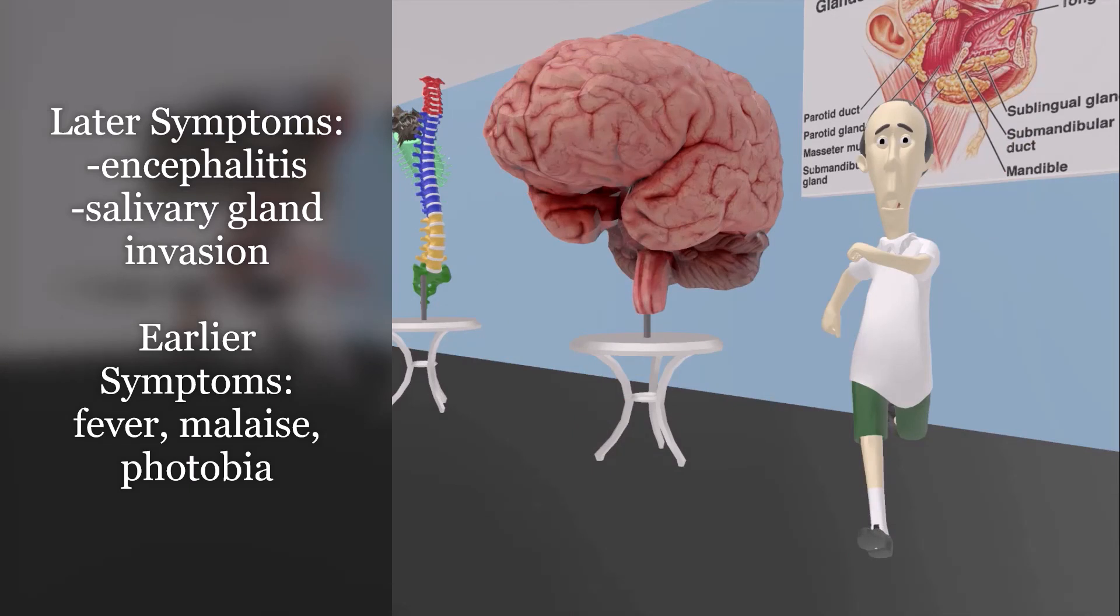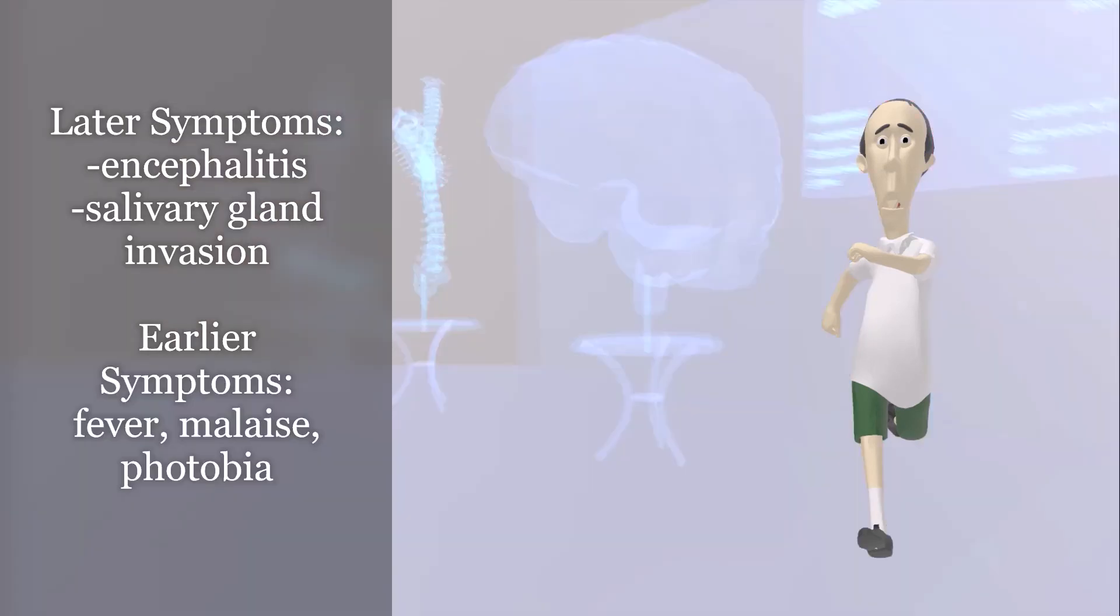Here is the lab teacher. Quite a cool lab teacher. Anyway, this lab teacher is going to help us remember the initial symptoms seen in a patient infected with rabies virus. This teacher has a random thermometer in his mouth, which helps us remember fever. We see that he is very tired from running away from the scary animals, which helps us remember the malaise and the general feeling of sickness. We notice that the light over here is bothering him, which helps us remember the photophobia. But again, these symptoms occur before the more debilitating symptoms, which we mentioned before.